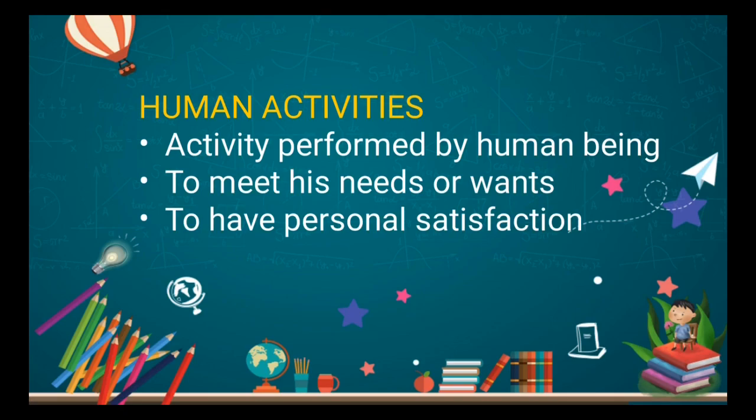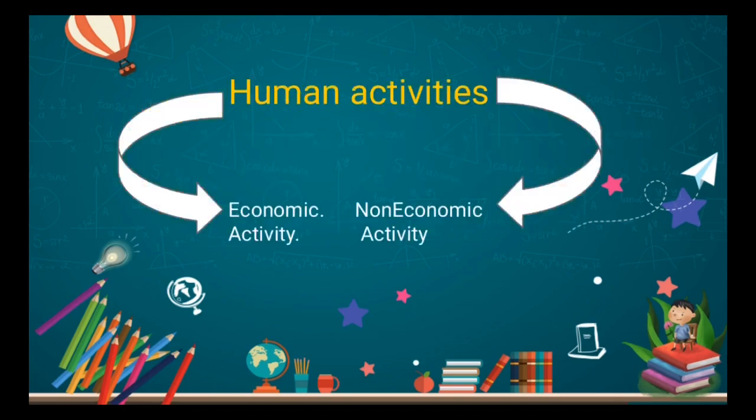Now we are going to see about the kinds of human activities. Human activities are broadly classified into two kinds: one is economic activity and the other is non-economic activity. We will see what economic activity is, with examples, and then move on to non-economic activity.